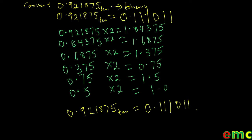So our final answer: 0.921875 in base 10 is equal to 0.11011 in base 2. In this example, we have simply converted a decimal fraction from base 10 to binary, which is base 2. Let's see how it works with another base.